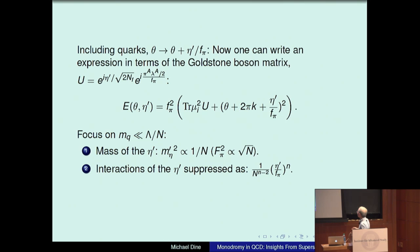The surprising part for the eta prime is this extra suppression in the interactions — the fact that all the interactions go to zero rapidly with N.